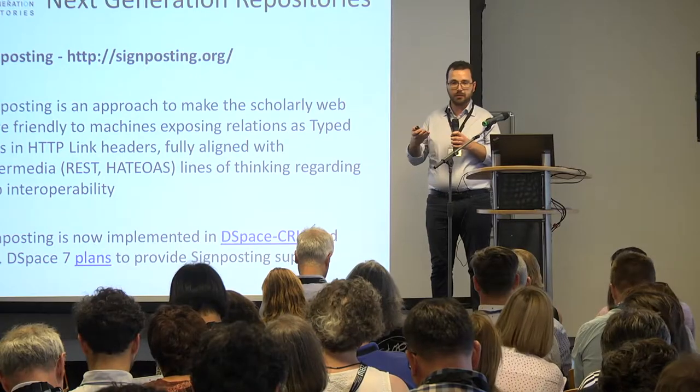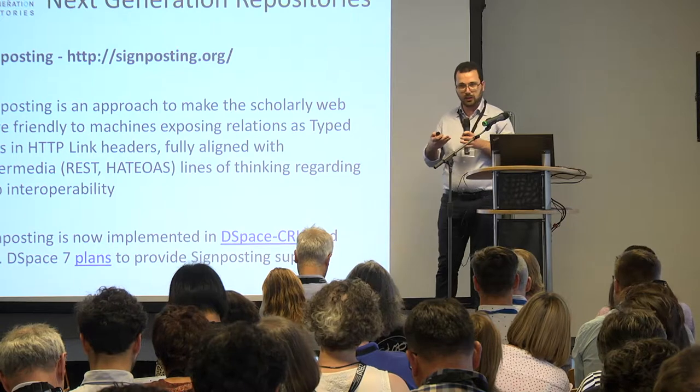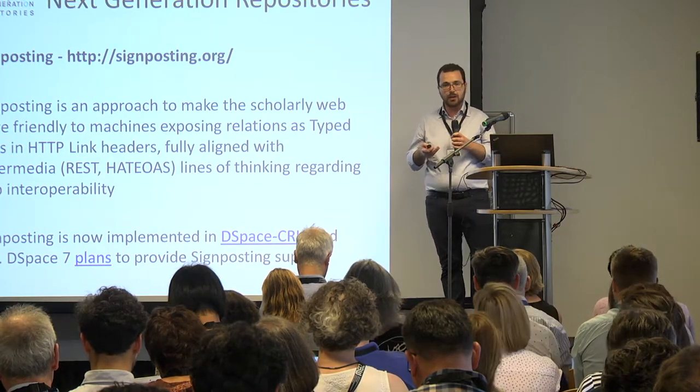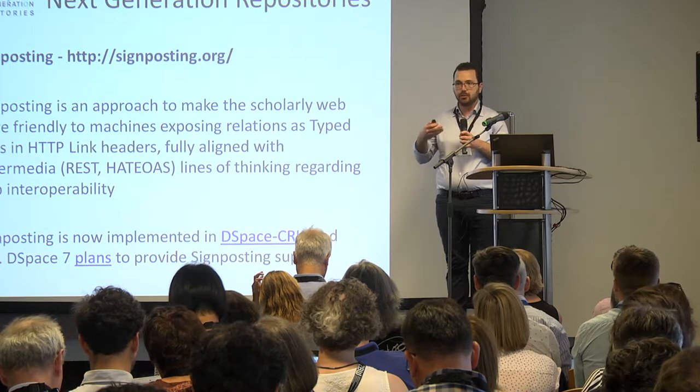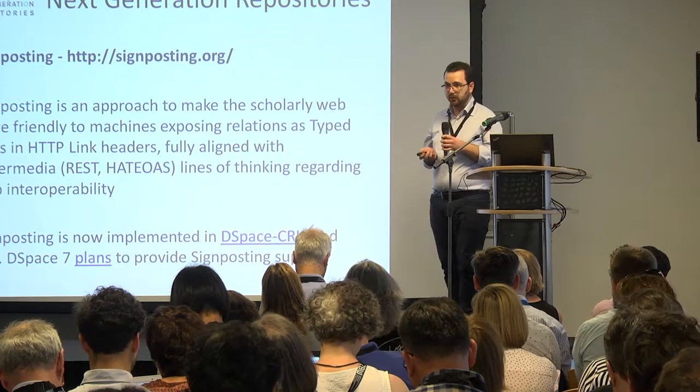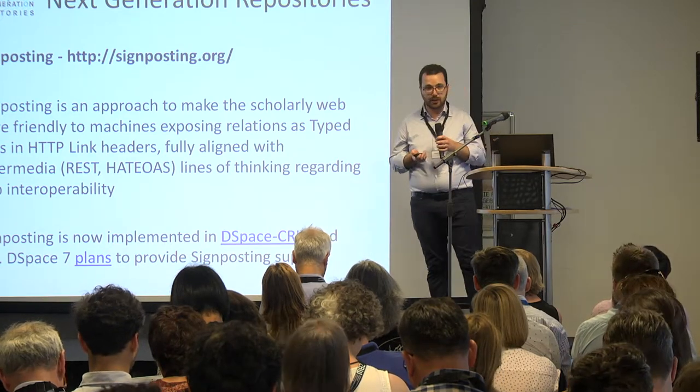It uses link headers to do that. When you look at your browser, you don't see signposting — it is invisible to a human. But the browser will receive additional information together with the web page telling you which is the PDF described in the splash page of the article and who are the authors. Signposting is already implemented in DSpace and in Open Journal Systems. I'm glad to say that this was an implementation that we did and released to the community.